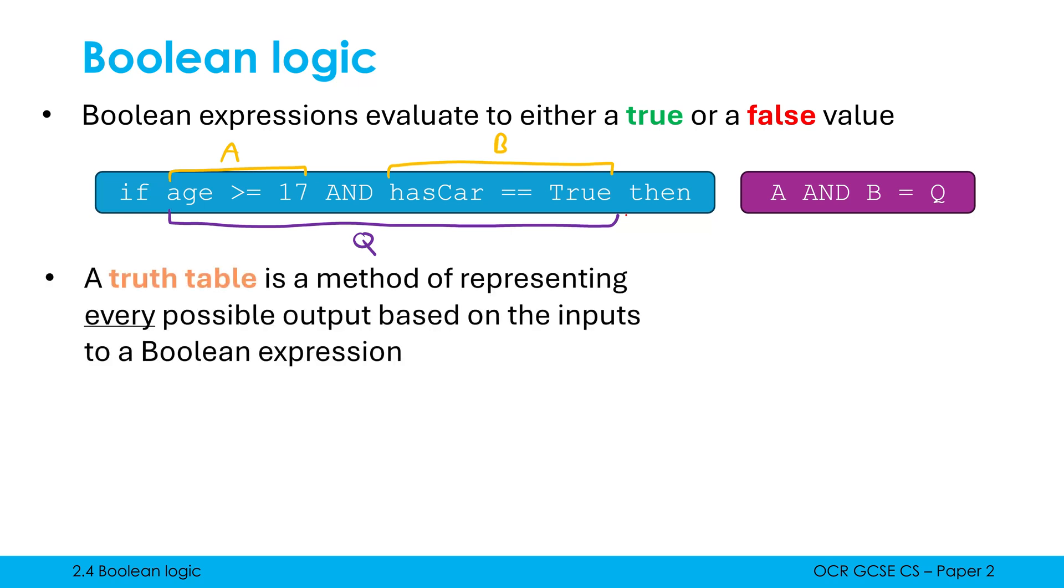Another important concept to talk about early on is a truth table. This sounds similar to a trace table, which you covered earlier in the course, but there are two different things. A truth table is a method of representing every possible output based on the inputs to a Boolean expression. So in this simplified version in purple, A and B are the two possible inputs. They can either be one or zero each. And Q is a possible output, can either be one or zero. And the truth table is showing all the possible inputs versus the possible outputs. So we are cycling through all the different possibilities I could have. Both A and B could both be false. A could be false, B could be true, and so on and so on. These are all the different possible combinations, and then the corresponding outputs from these combinations.